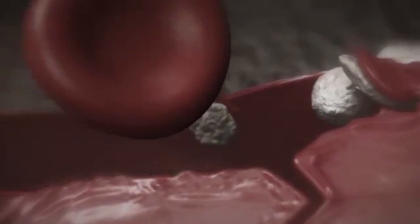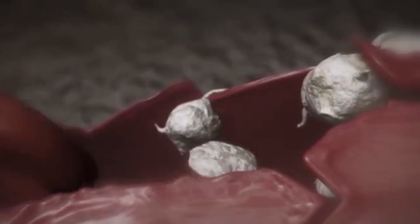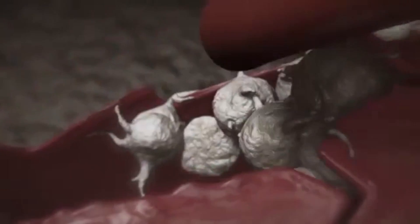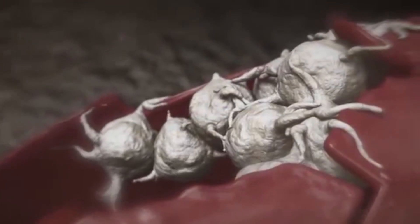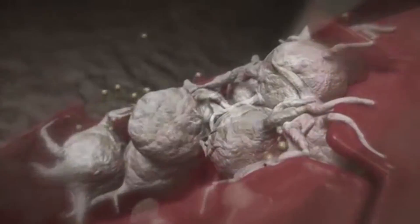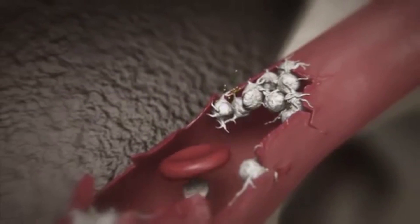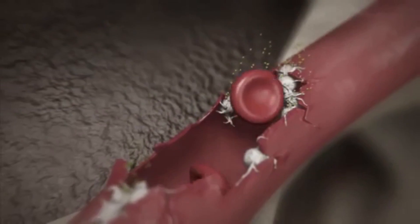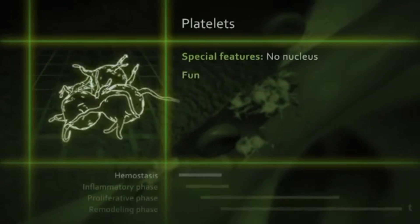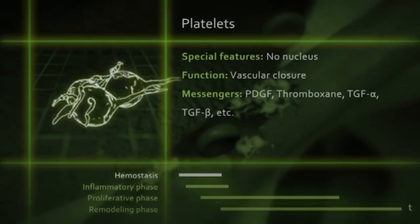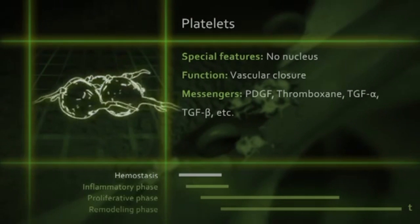Next, the bleeding is stopped by blood platelets, also known as thrombocytes. When they are exposed to collagen and other proteins from the traumatized tissue and implant surface, they aggregate and close the ruptured blood vessel. Platelets release various messenger substances for cell-to-cell communication, such as thromboxane, which promotes platelet aggregation, or PDGF, platelet-derived growth factor, which stimulates the cell division of fibroblasts.